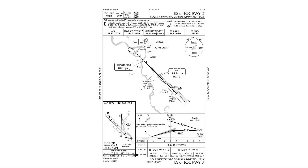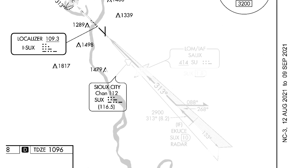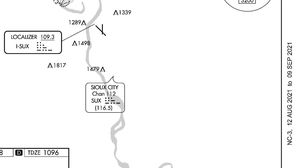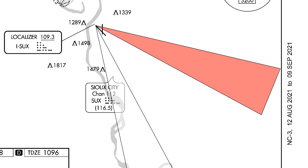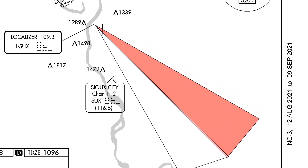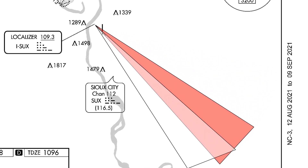An ILS approach provides aircraft with lateral guidance by using a localizer. This example from the Flight Insight IFR Online Ground School uses the ILS approach at Sioux City. Two signals are broadcast from the back or departure end of the runway and oriented so that they overlap along the extended centerline of the runway.